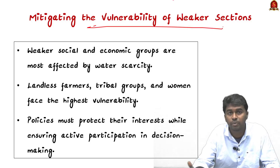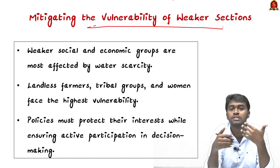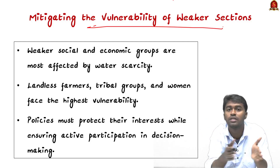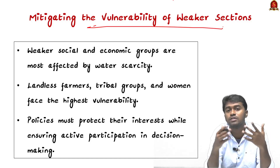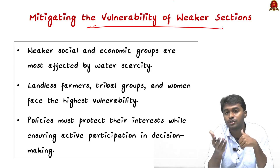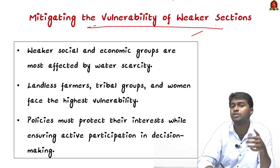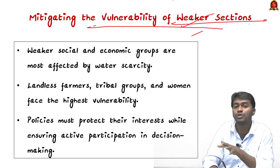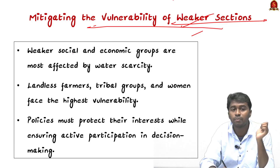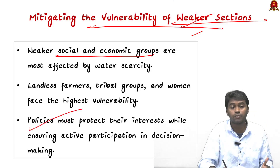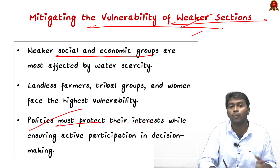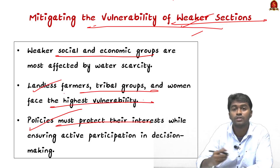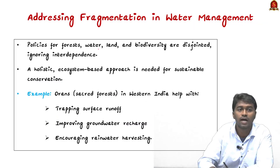Another issue is mitigating the vulnerability of weaker sections. Climate change disproportionately affects society — rising sea levels first affect coastal communities, then farming communities, and then those in higher altitude regions. The first victims of climate events are always the weaker and marginalized sections. Therefore, when framing policy, we need to protect the interests of landless farmers, tribal groups, and women, who face the biggest impacts of climate change.